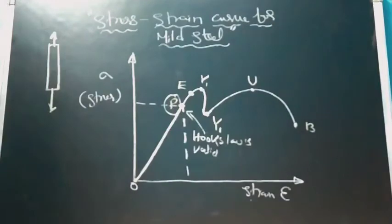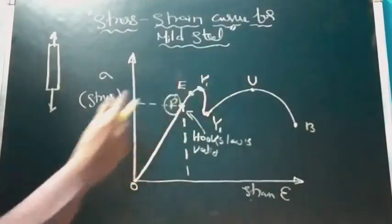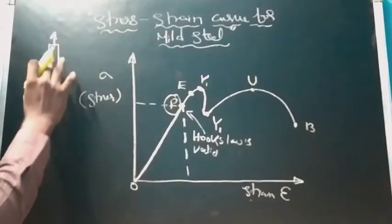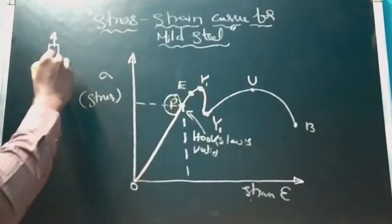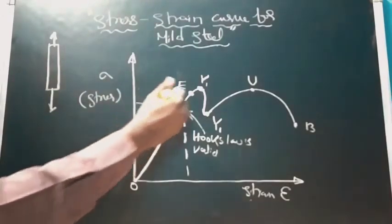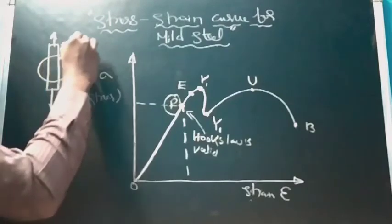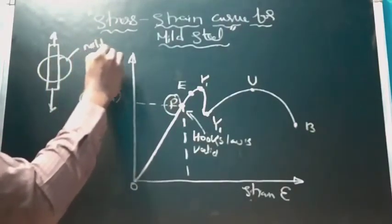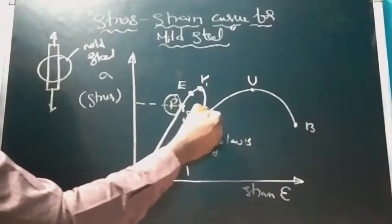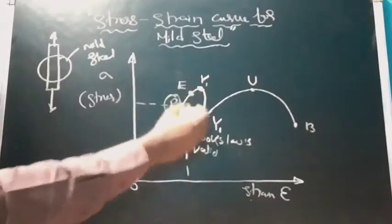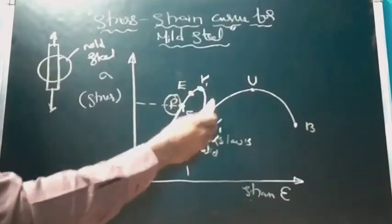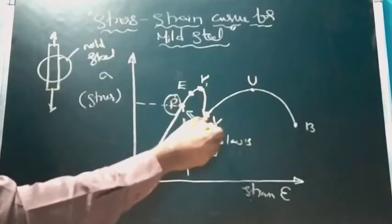Next we have the upper yield point. This point is the initiation of dislocation — the material starts trying to deform. In mild steel, the carbon molecules start having dislocation in the body. Then we have the lower yield point, which is relative to the upper yield point — here the material overcomes the dislocation.